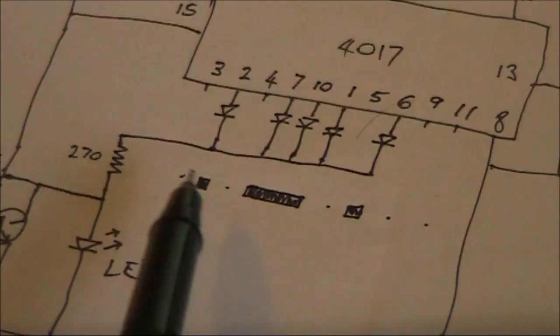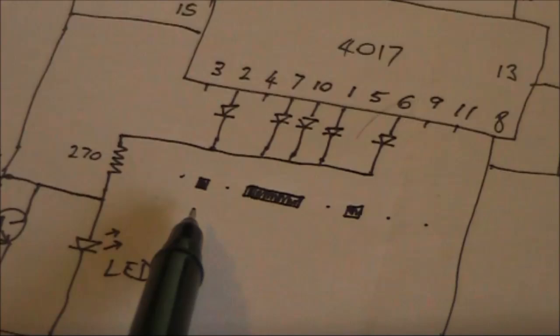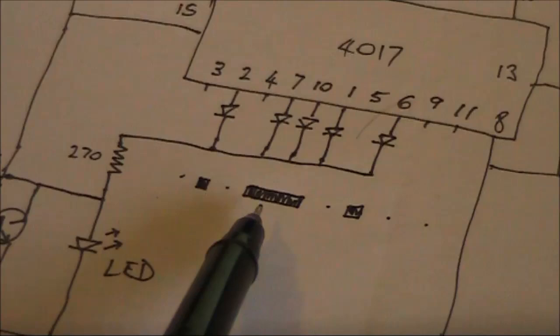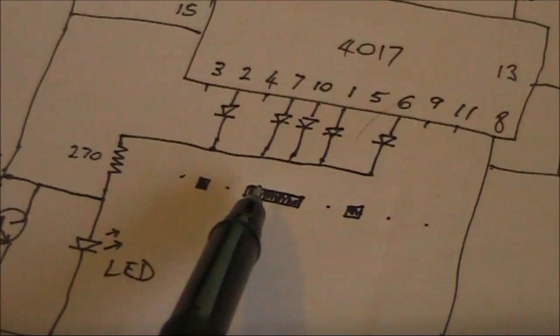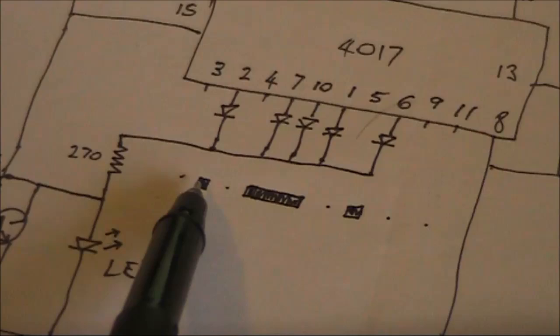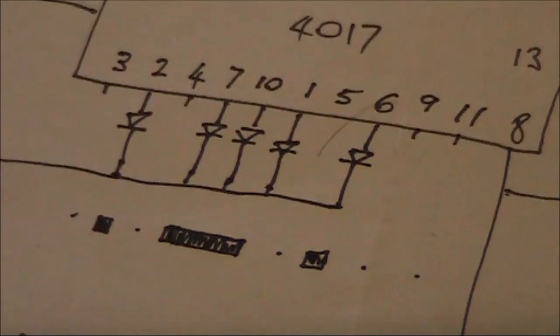If you wanted to configure it for other letters in Morse code, then you need to put the diodes on different outputs. For instance, if you wanted to send the letter A, you'd just remove this diode. To send the letter N, you'd remove that diode. Or, to send the letter T, you'd remove both diodes, leaving just the dash.